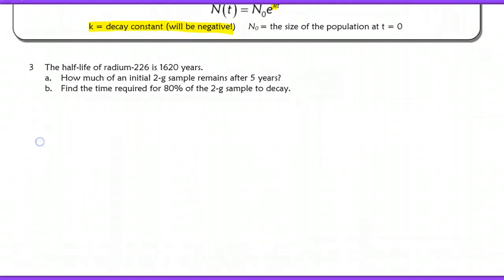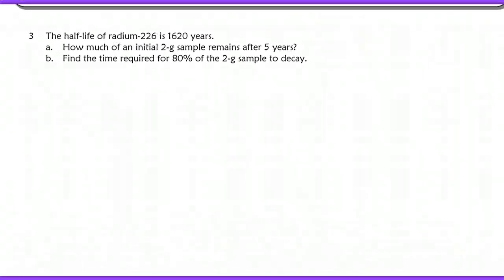Problem three says the half-life of radium-226 is 1,620 years. And then it asks how much of an initial 2-gram sample remains after five years. This is jumping right in and asking you a question about the sample, but first we need to figure out what's K. So here again, we're going to find K first, and then we will answer our question. So going back to our given, it says the half-life of this radioactive substance is 1,620 years.